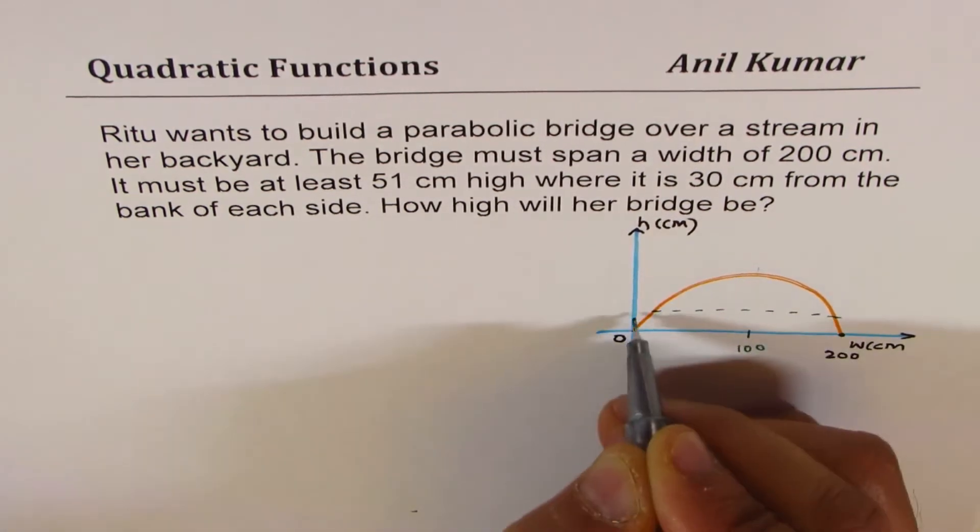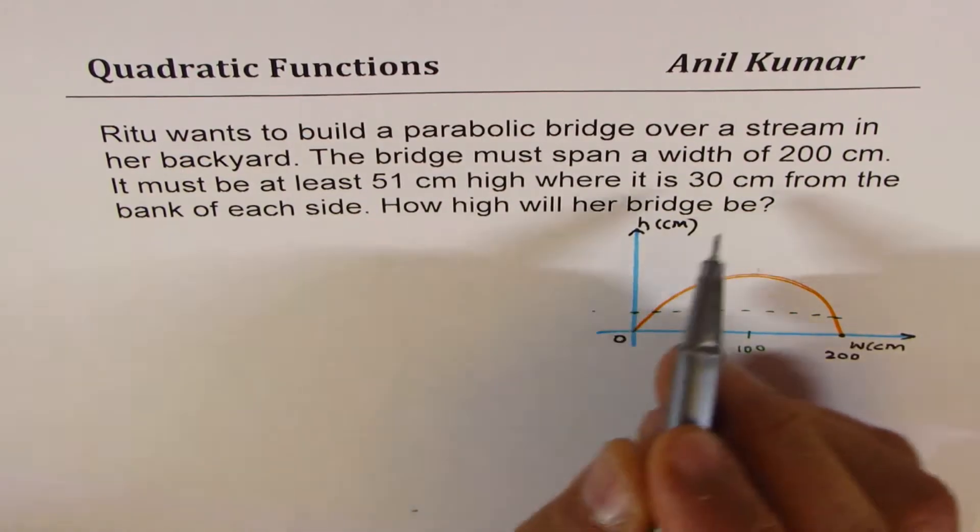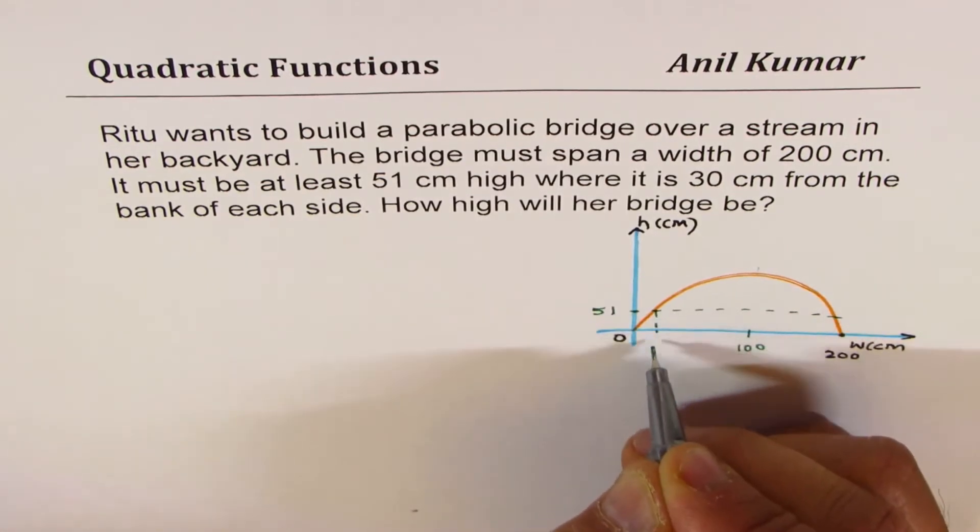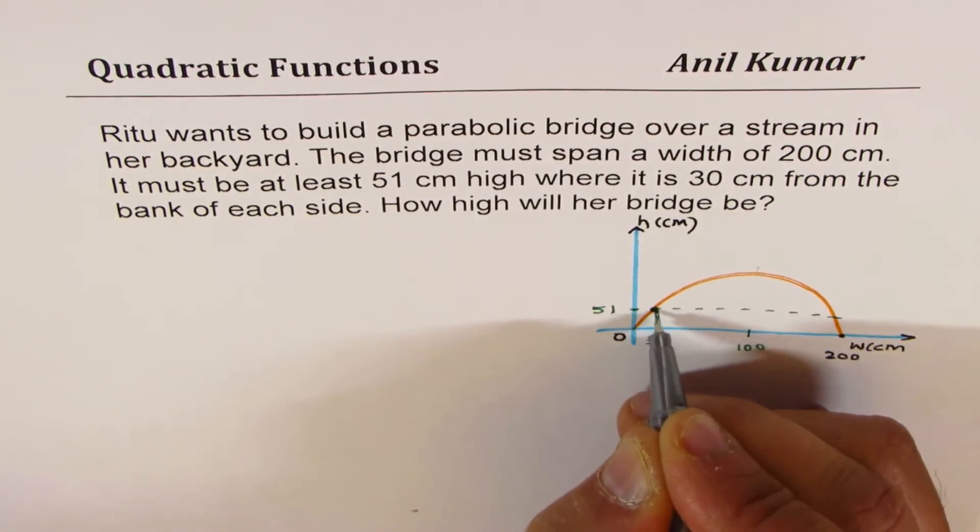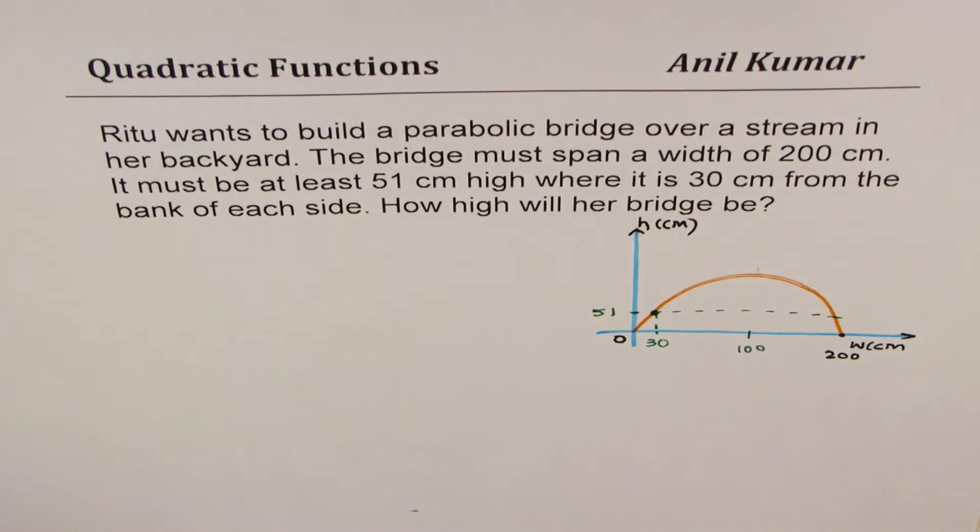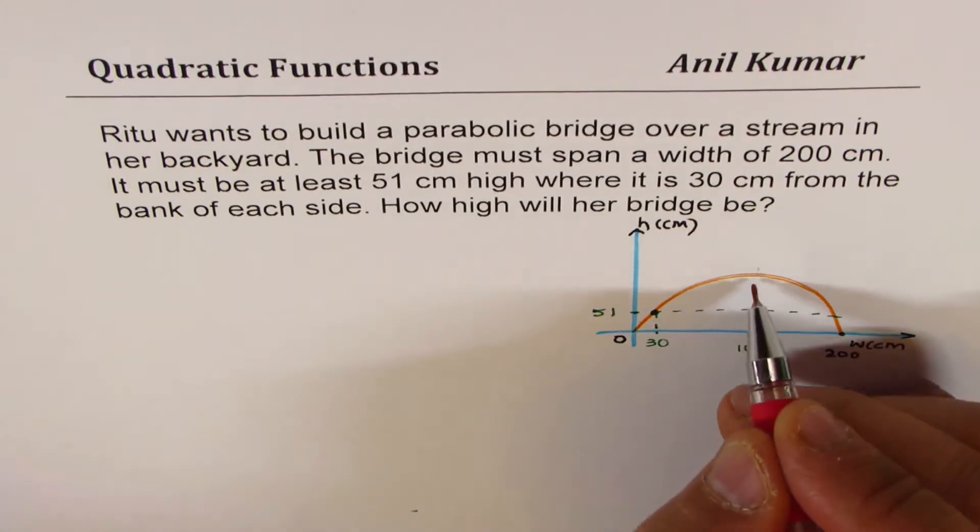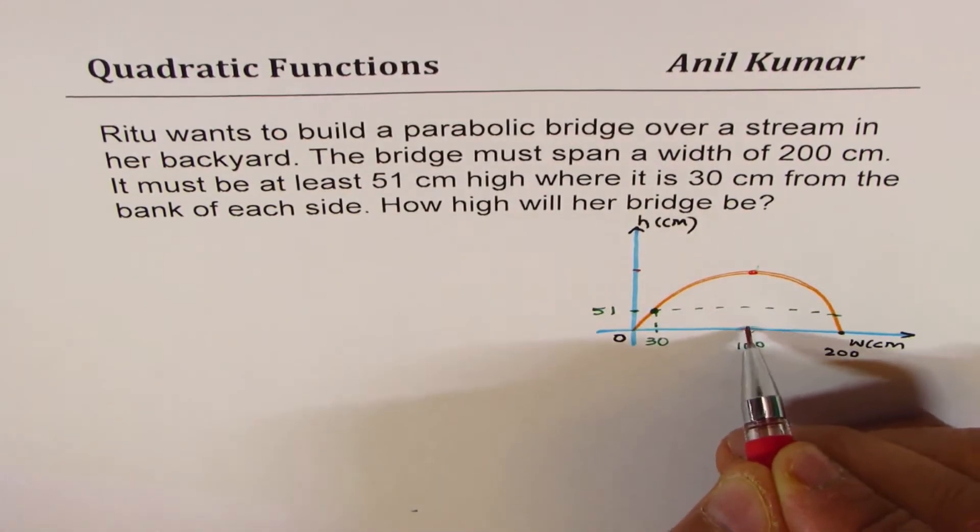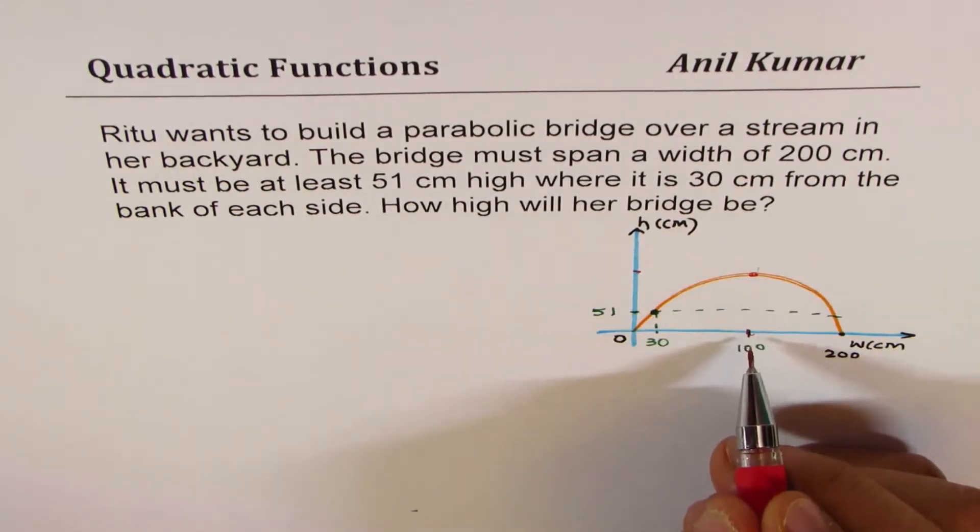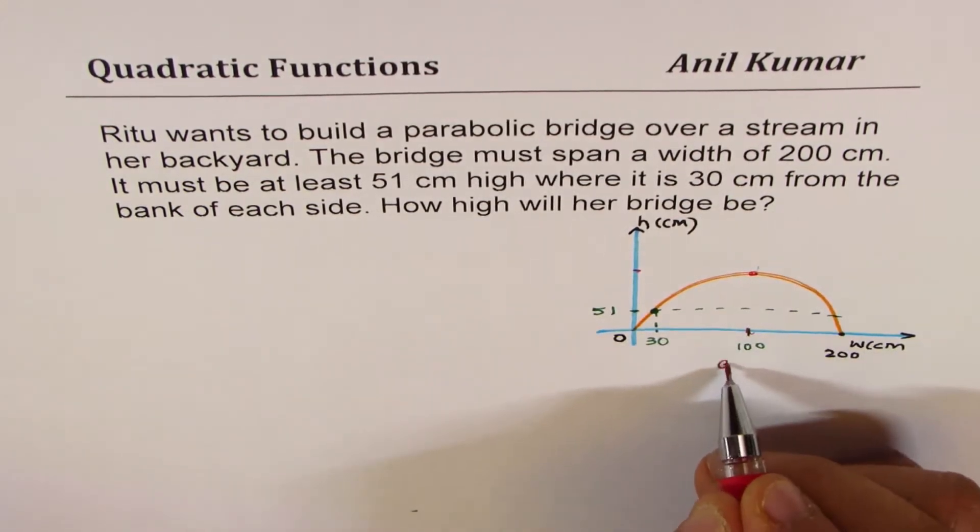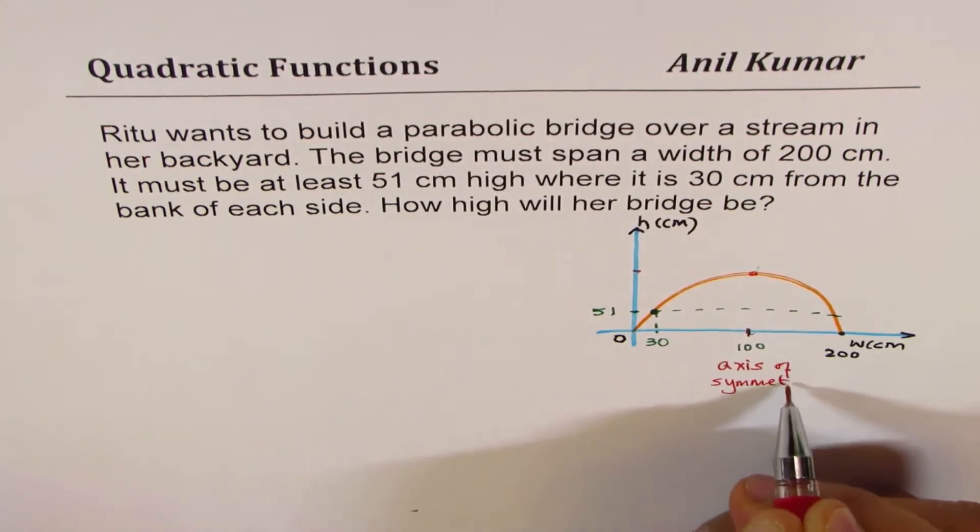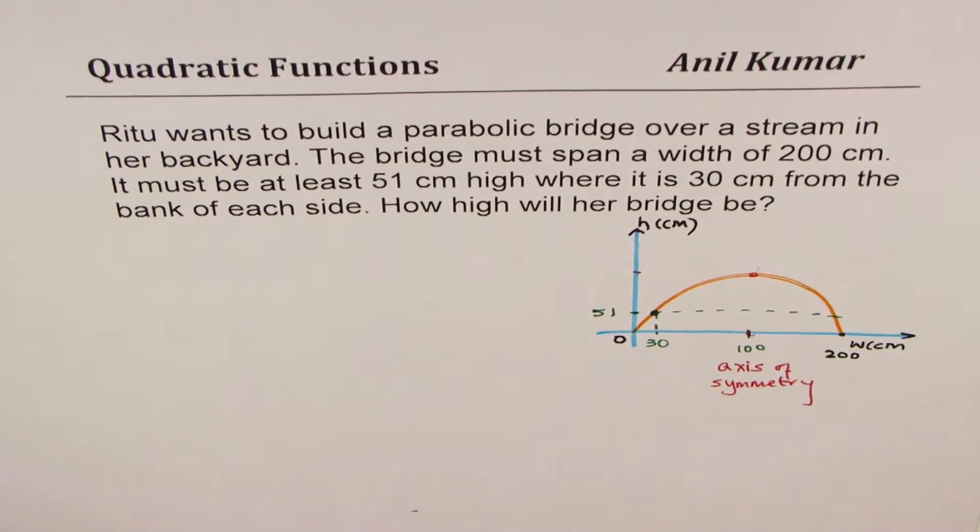From the symmetry we can say this is kind of hundred, so 50, so somewhere here we are talking about a height of 30 centimeters. It must be 51 centimeters, and the distance is 30. So that is a point which we are given on this parabola. What do we need to find? How high will her bridge be? The maximum height is going to be at width of hundred, which is right in the center, because that is the axis of symmetry.